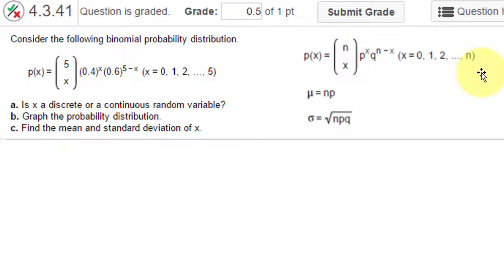Remember, a binomial is essentially a yes-no, win-lose, success-failure, and that the probability has to be constant throughout the experiment. q is just 1 minus p.